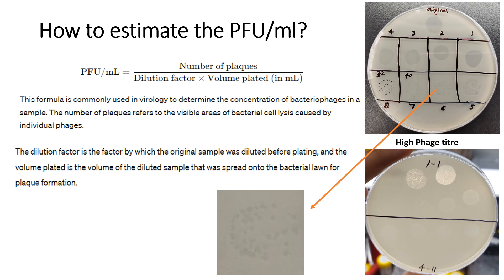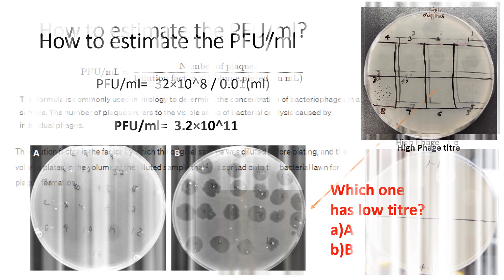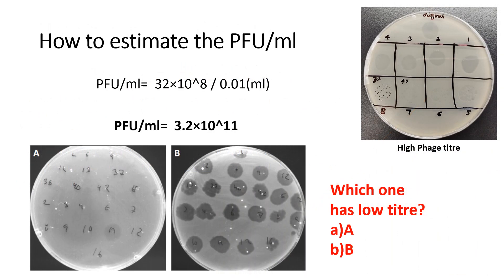I will convert 10 microliters into ml, which equals 0.01 ml. Now let's calculate the PFU. There were 32 plaques, the dilution was 8, and the volume was 0.01 ml. After calculation, the PFU comes out to be 3.2 × 10¹¹, which represents the highest titer measured so far.